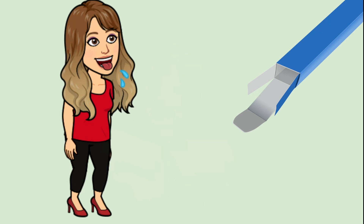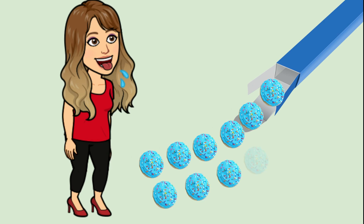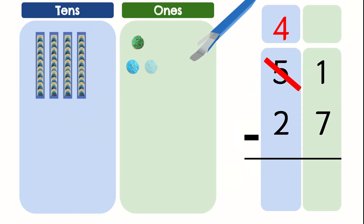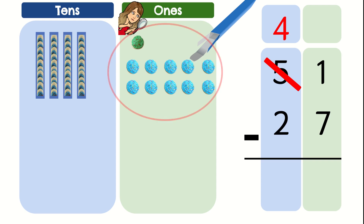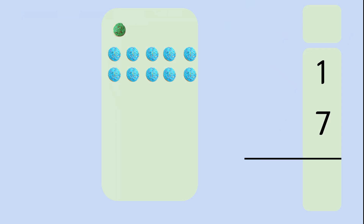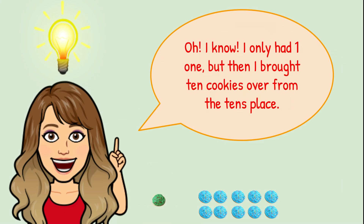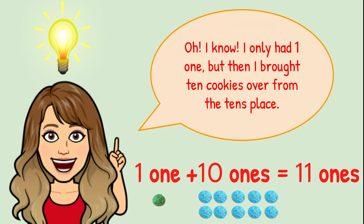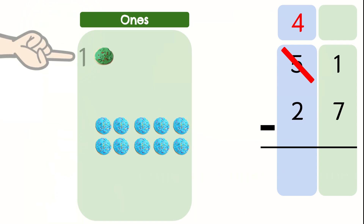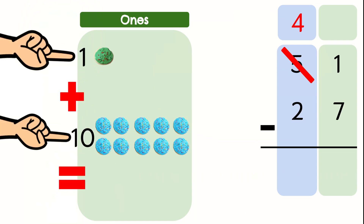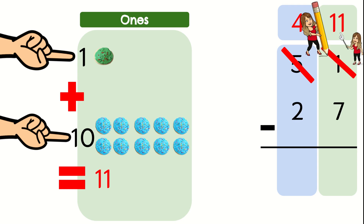Now let's open that box of cookies: 1, 2, 3, 4, 5, 6, 7, 8, 9, 10. I only had one one, but then I brought 10 cookies over from the 10s place. So one one plus 10 ones equals 11 ones — one plus 10 equals 11. We better fix this on the algorithm: cross out the one and change it to 11.